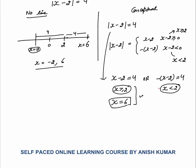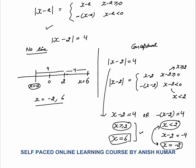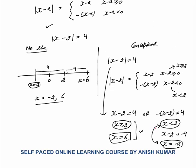Again we got two values of x: 6 and -2. So we have two methods to solve modulus questions. Which one to apply depends on the question — sometimes the conceptual method, sometimes the number line method. The answer will be the same from both methods.